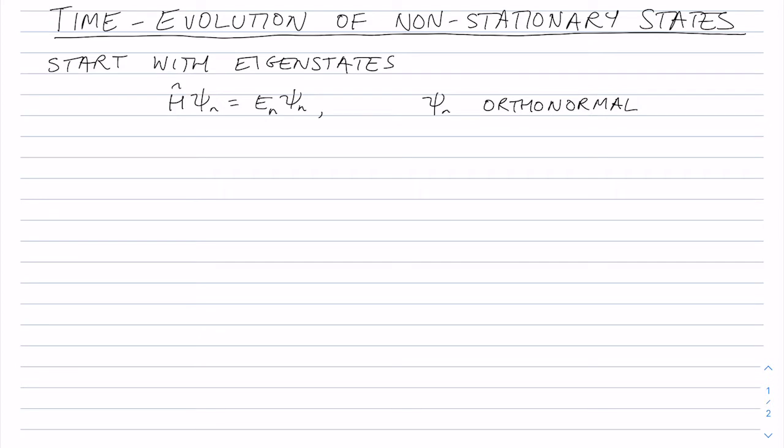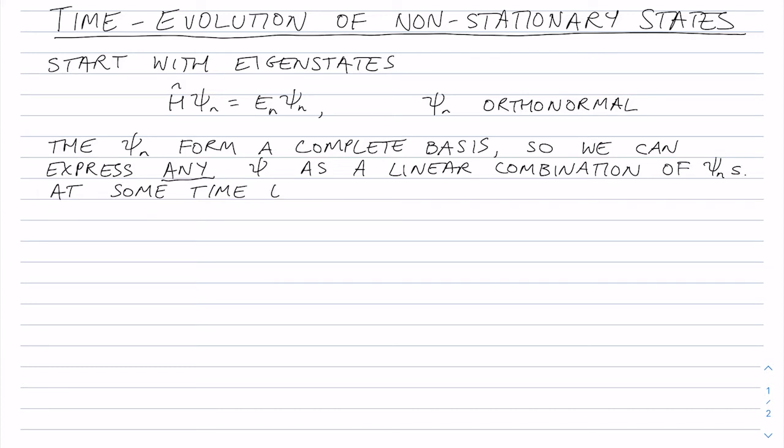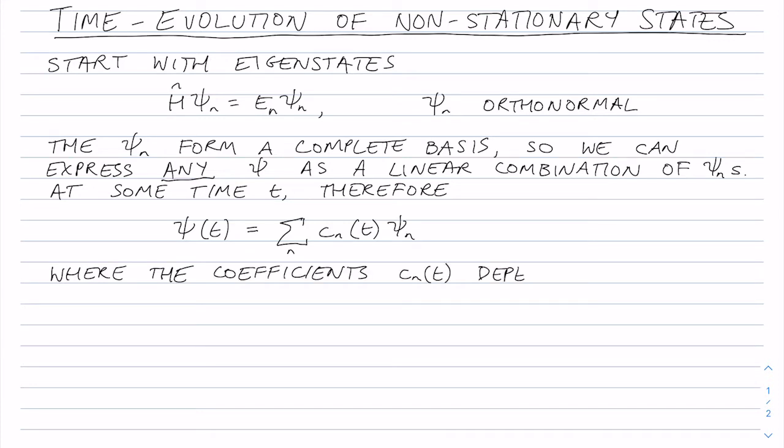So we'll start with the eigenstates, which are the stationary states. And they're going to be the basis from which we form our non-stationary states. And so our time-evolving state, which is going to be psi as a function of t, note that there's no subscript here. So this is not one of the eigenstates. Nonetheless, we can express this wave function, which evolves in time, as a sum over the eigenstates, but with time-dependent coefficients. Okay, so that's the wave function and how we're going to express it.